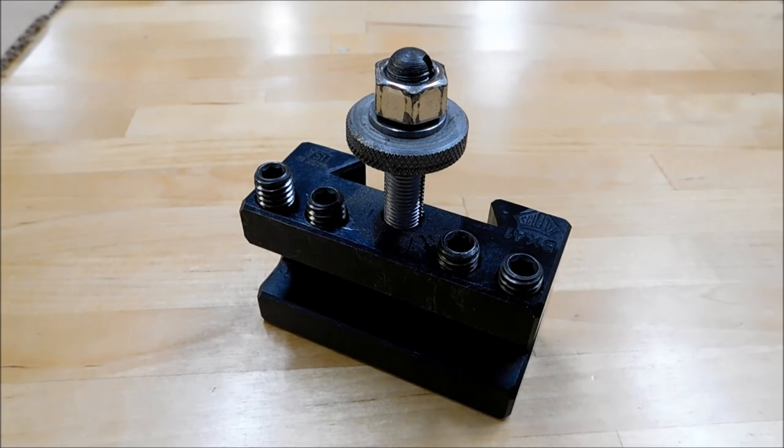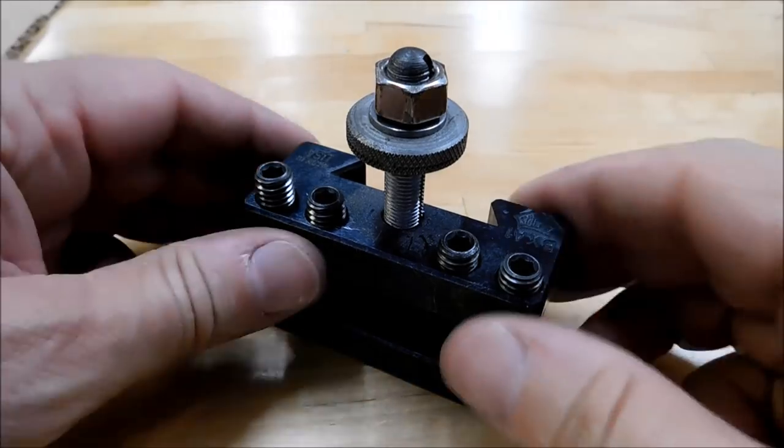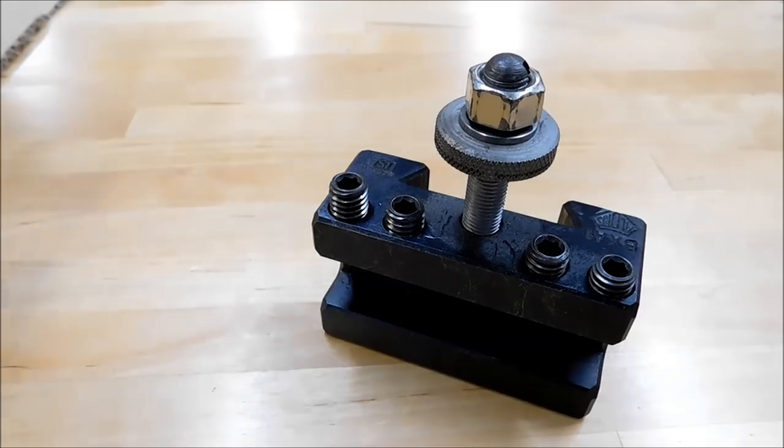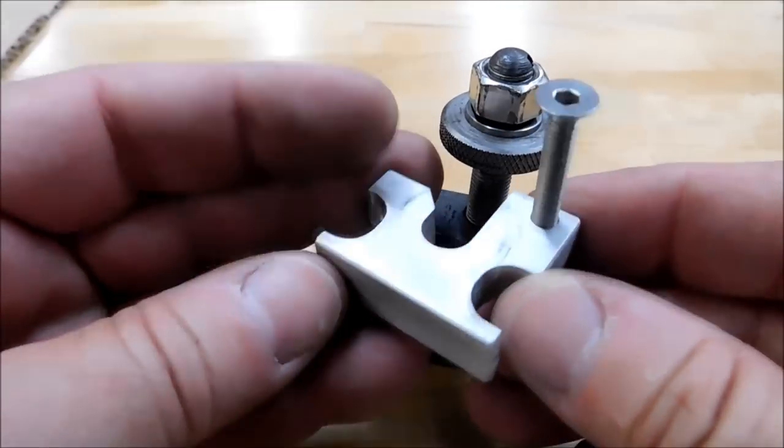If you've ever had the opportunity to use a tool upside down in your tool holder, or a tool that's too small and you run out of adjustment vertically when you install your tool, you need to make one of these. Just a simple piece of aluminum.